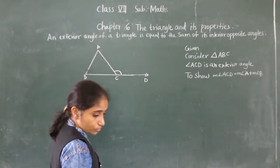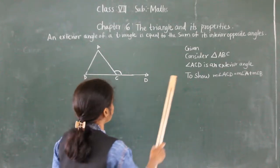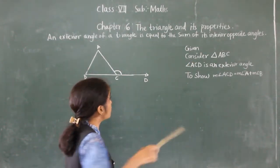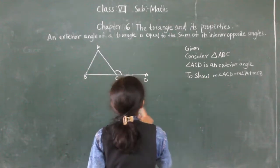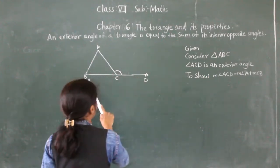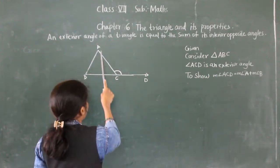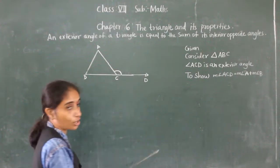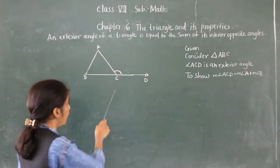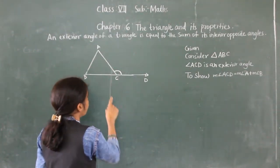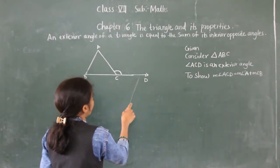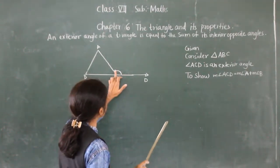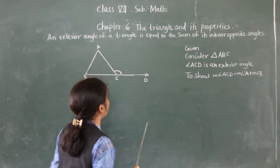So now, consider triangle ABC. Angle ACD is the exterior angle of this triangle — this is the exterior angle.